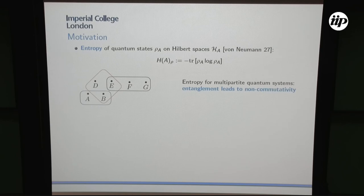I want to talk about entropy, in particular about quantum entropy. This is of course defined by von Neumann in 1927, and it's given by minus the trace of rho_A log rho_A, where rho_A is any finite-dimensional quantum state. One interesting comment here is that this is actually 20 years before the works of Shannon in classical information theory. In some sense, quantum entropy was considered before classical entropy.